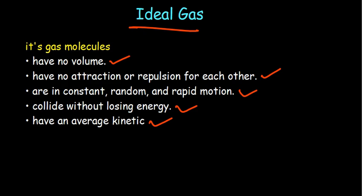Finally, ideal gas molecules have an average kinetic energy that is directly proportional to their absolute kelvin temperature. So temperature is essentially a measure of the average kinetic energy of the molecules. These are the key assumptions of the ideal gas model.